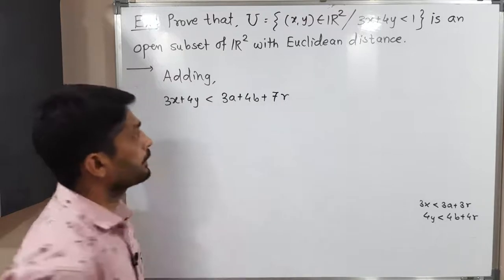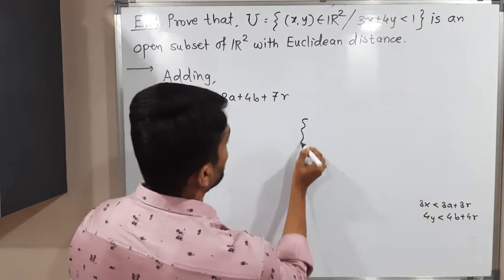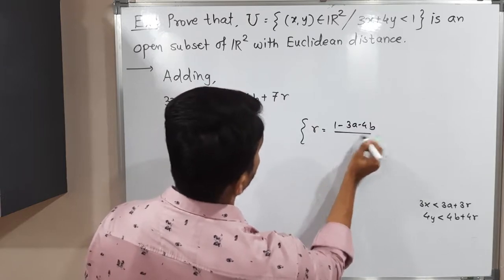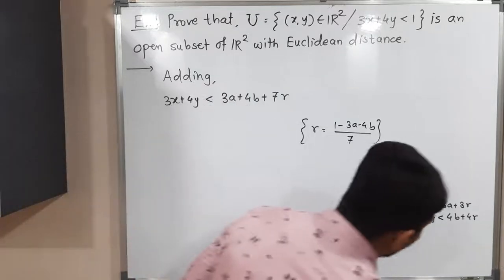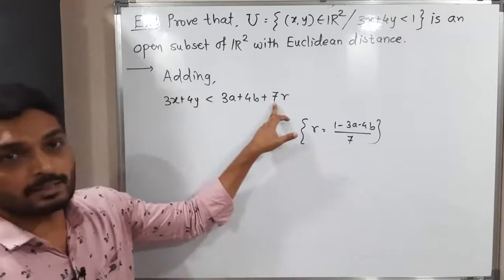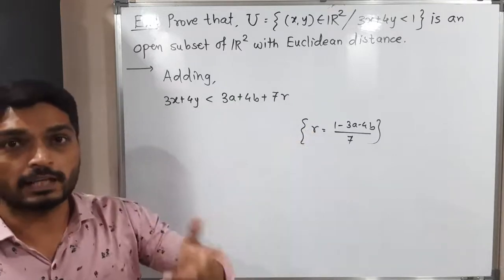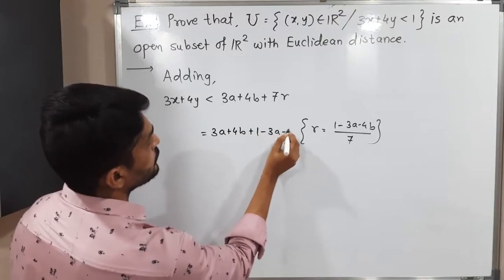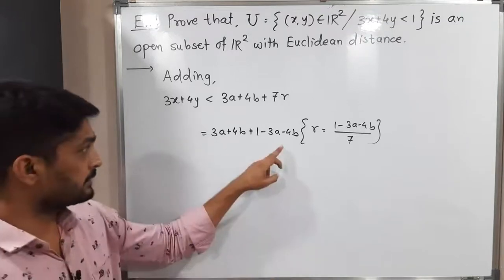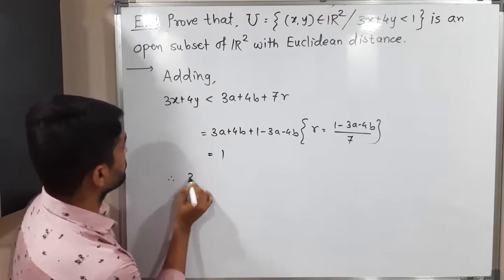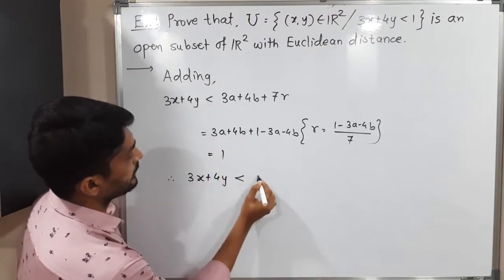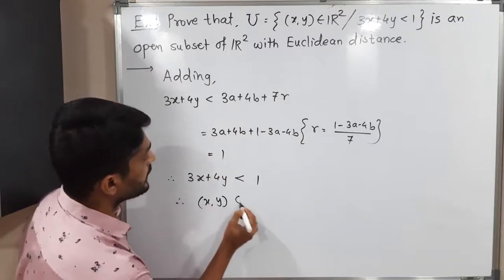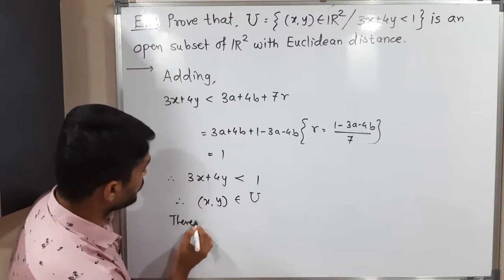So 3x + 4y < 3a + 4b + 7r. Recalling the definition of r: r = (1 − 3a − 4b)/7, so 7r = 1 − 3a − 4b. Substituting this in: 3a + 4b + 7r = 3a + 4b + (1 − 3a − 4b). The 3a and 4b terms cancel, leaving just 1. Therefore 3x + 4y < 1, which is exactly the condition for membership in U. So (x, y) satisfies the condition and therefore (x, y) ∈ U.